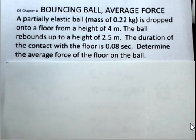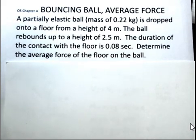In this physics example problem, we drop a ball that's not perfectly elastic, it's just partially elastic. Mass of 0.22 kilograms, it's dropped from a height of 4 meters, and the ball rebounds up to a height of 2.5 meters.